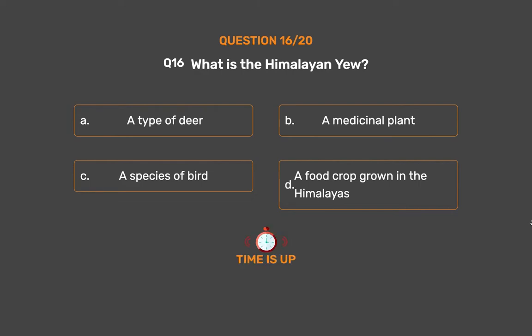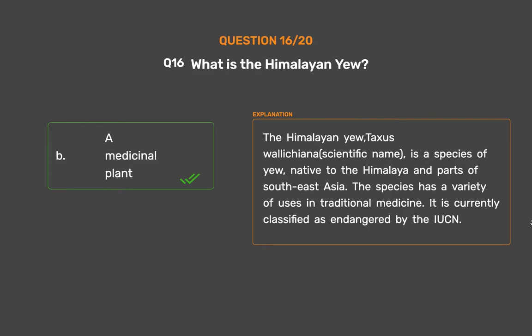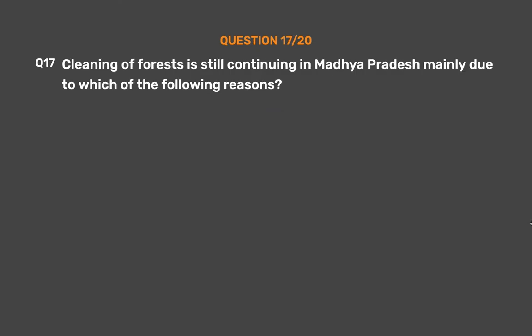The correct answer is Option B: A medicinal plant. The Himalayan Yew (Taxus wallichiana, scientific name) is a species of yew native to the Himalayas and parts of Southeast Asia. The species has a variety of uses in traditional medicine and is currently classified as endangered by the IUCN.